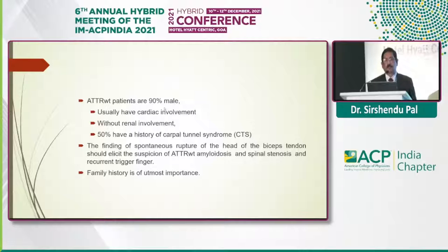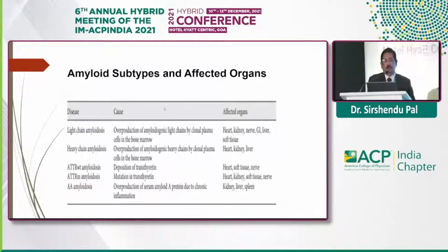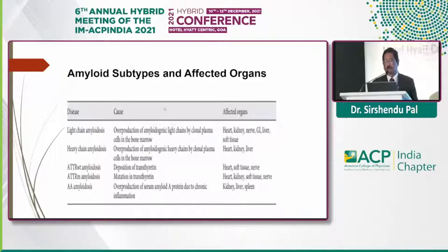Coming to amyloid subtypes according to involved organs: AL amyloidosis involves overproduction of light chains by clonal plasma cells in bone marrow, affecting heart, kidney, nerve, GI tract, liver, or soft tissue. Heavy chain amyloidosis involves overproduction of amyloidogenic heavy chain proteins, affecting heart, kidney, or liver. ATTRwt amyloidosis deposits transthyretin in heart, soft tissue, or nerve. ATTRm amyloidosis due to transthyretin mutation deposits in heart, kidney, soft tissue, or nerve. AA amyloidosis is due to overproduction of serum amyloid A due to chronic inflammation, affecting kidney, liver, or spleen.